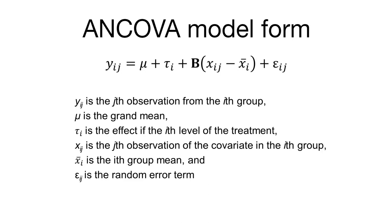In the fish dataset, each observation y_ij is the weight of a fish — the thing we're interested in predicting. We have the grand mean of all the fish, and tau sub i represents the effect of the ith species of fish. Our beta value captures the role of fish length: can we use the length of the fish to predict its weight? We calculate those length values and compare them to the average length for each species, x bar sub i.